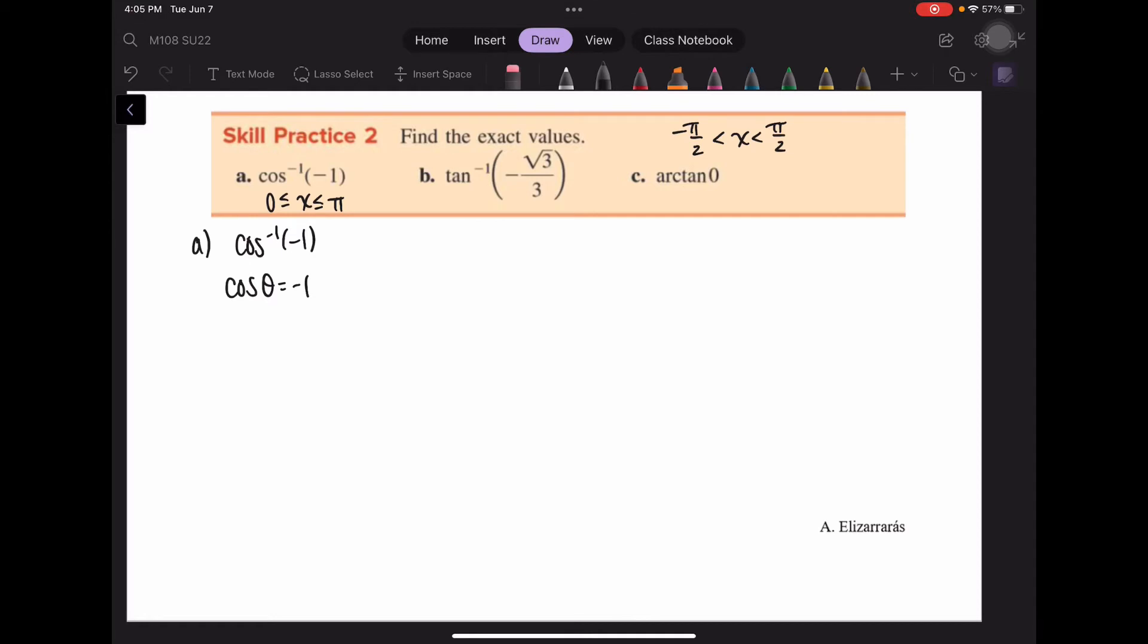So where is cosine equal to negative 1? Cosine is equal to negative 1 in between the second and the third quadrant, which is at pi.